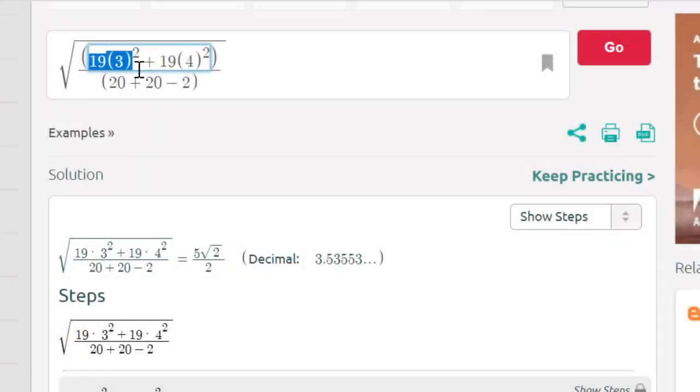Let's go back to Symbolab and change our formula. We're going to add our two standard deviations together. That was 3 and 4.